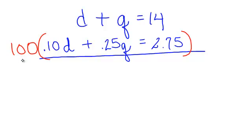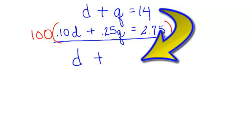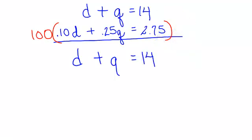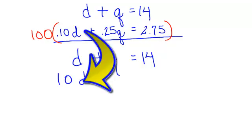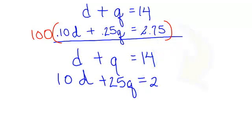When I multiply by 100, I move everything to the right two places, so I will have no decimal points. The first equation, I am going to write it again. I like to keep my system together. I will have just d plus q equals 14. In the second equation, I am multiplying everything times 100. 100 times 0.10 is just 10d,